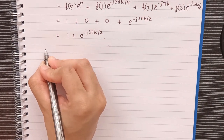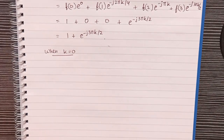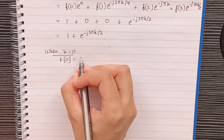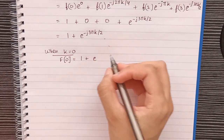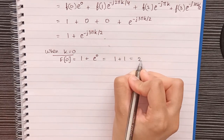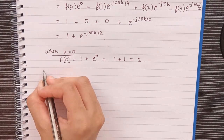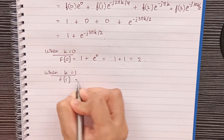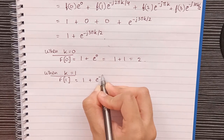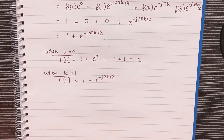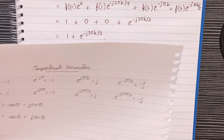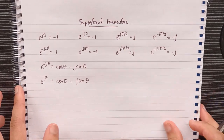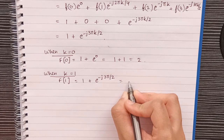Now we take each value of k. When k = 0: F(0) = 1 + e^0 = 1 + 1 = 2. When k = 1: F(1) = 1 + e^(−j3π/2). Looking at our important formulas, e^(−j3π/2) = j, so this becomes 1 + j.